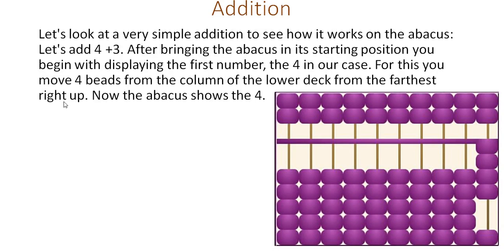Let's look at a very simple addition to see how it works on the abacus. Let's add 4 plus 3. After bringing the abacus to its starting position, you begin by displaying the first number, the 4 in our case. For this you move 4 beads from the column of the lower deck from the furthest right up. Now the abacus shows the 4.